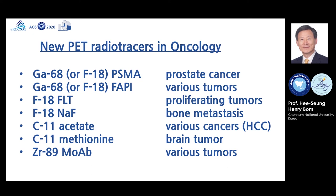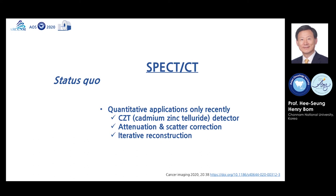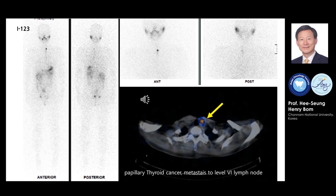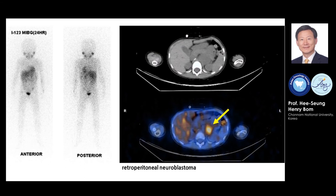Finally, let me briefly introduce SPECT-CT. SPECT-CT is more recently established compared to PET-CT. Current technologies for SPECT-CT include quantitative applications using CZT detectors and software for correction and reconstruction. As SPECT-CT is recently introduced, we expect further development for more rapid and more quantitative imaging. This is an example of SPECT-CT in a thyroid cancer patient — we can easily localize a small metastatic lymph node. This is SPECT-CT of retroperitoneal neuroblastoma using iodine-123-MIBG as a radiotracer.